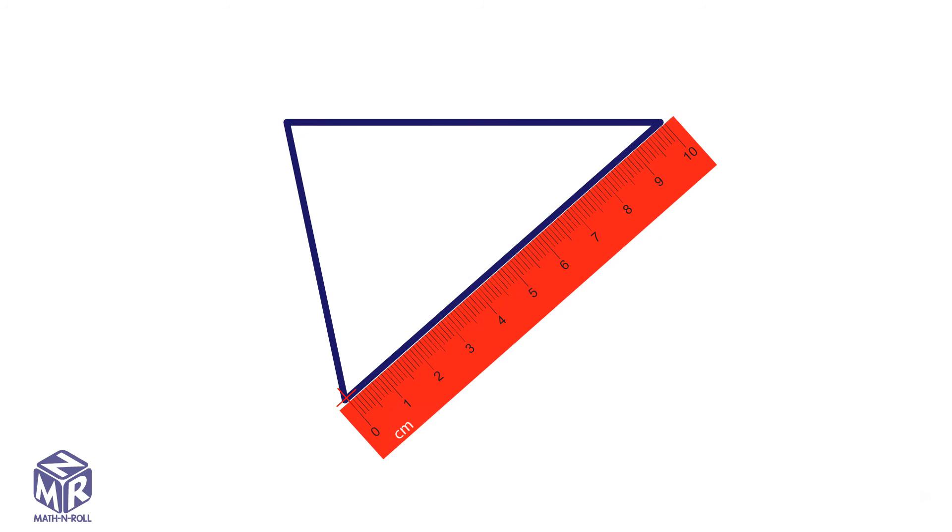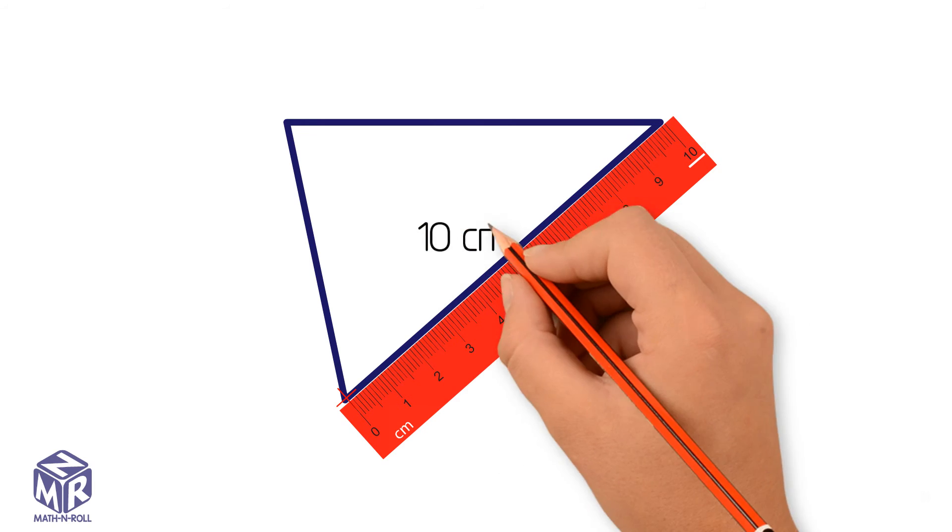Let's try another example. This time we're going to use a centimeter ruler. Mark the starting point. Line up the starting point with the zero mark on the ruler. The length of the first side is close to 10 centimeters, so we write down 10 centimeters for this side.